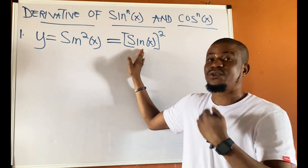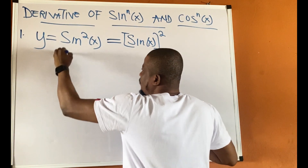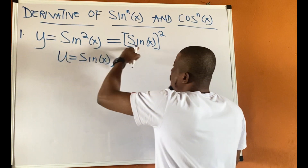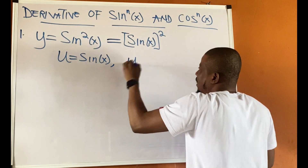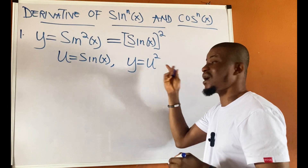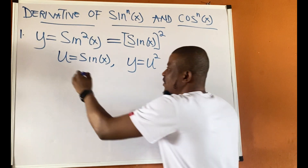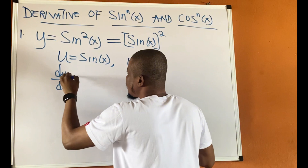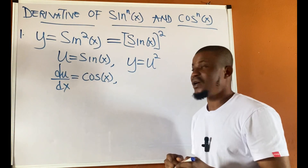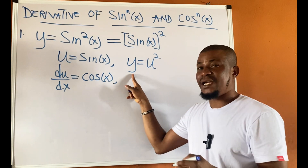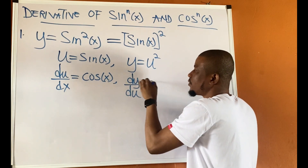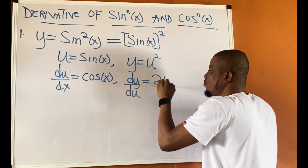We can now identify our u and write our y. Our u here would be sine of x, and then y becomes u to power 2 — y equal to u squared. We simplify our du/dx and our dy/du. If I differentiate sine x with respect to x, I have cos x. Then differentiating y with respect to u gives me 2u.